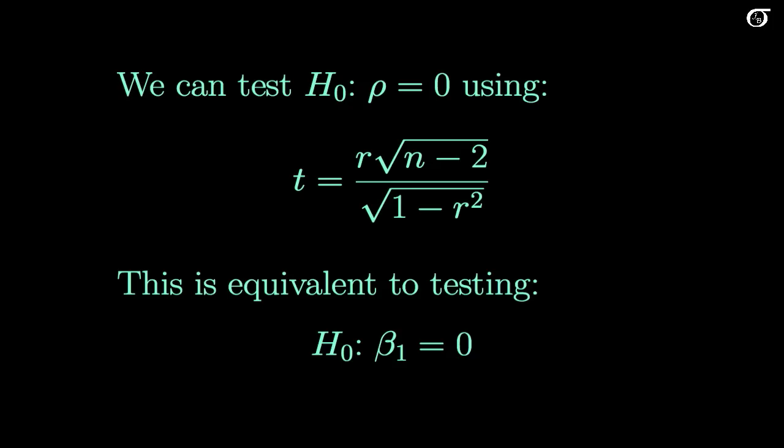Now if we so desired, we can test the null hypothesis that the true correlation, the parameter's value, is equal to 0, and we have a test statistic for that. It is just a basic t-test statistic. But it is exactly, identically, equivalent mathematically to testing the null hypothesis that the true slope is equal to 0, and that is the test that is often shown in the output. So there isn't typically a need to carry out this test again, because very often this has been done for us in computer output.